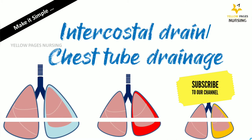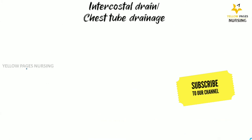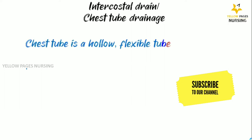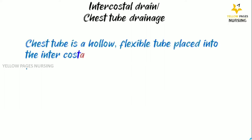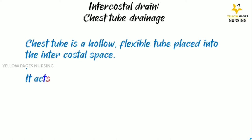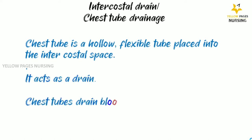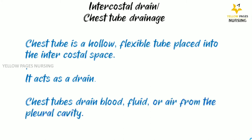Let's get into the topic. Intercostal drain or chest tube drainage — a chest tube is a hollow flexible tube placed into the intercostal space. It acts as a drain to drain blood, fluid, or air from the pleural cavity.